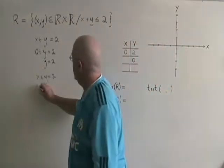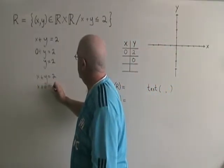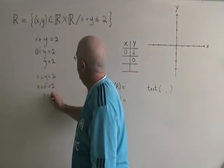If y equals 0, I get x plus 0 equals 2, x therefore equals 2,